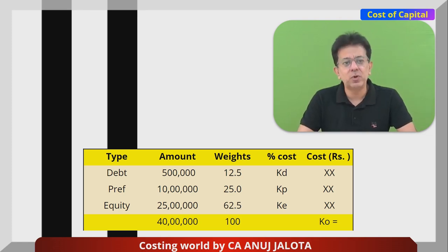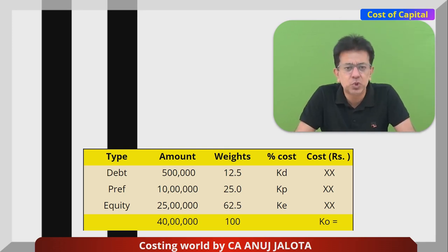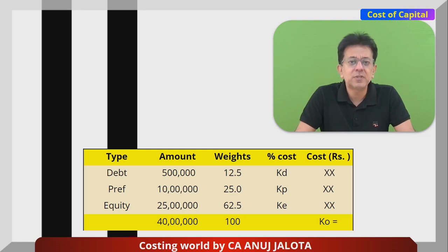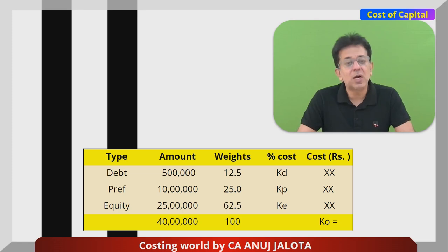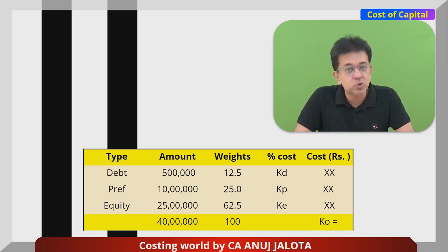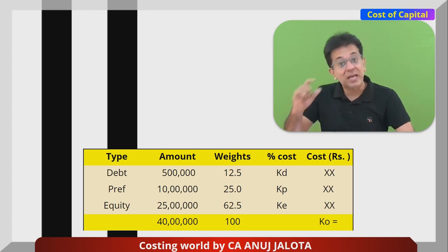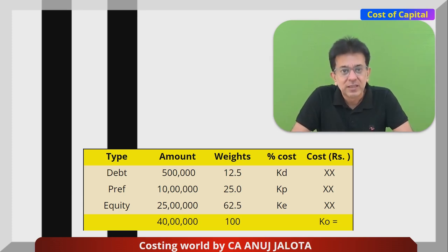In my example you can see weights of 12.5, 25, and 62.5. But some people may have a notion that in the long run their company will have, say, 50% equity, 30% preference, and 20% debt — maybe not today, but somewhere in the near future those funds will come in that ratio. So why not use those as weights from today? Such weights are called target weights.